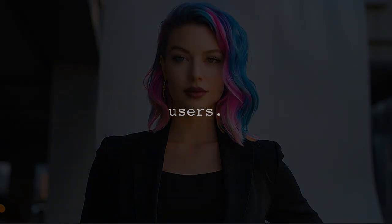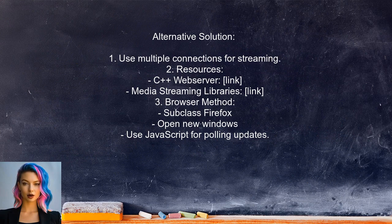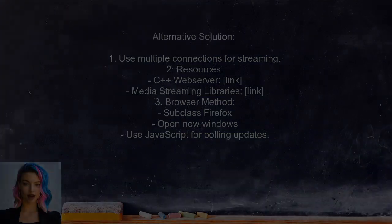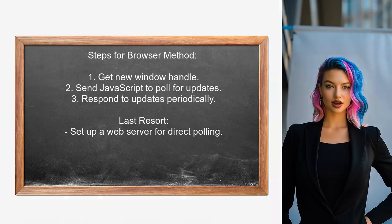An alternative approach suggests using multiple connections to manage streaming, with links to resources for setting up a web server in C++ and media streaming libraries. Another method uses a web browser — specifically Firefox — to create a program that polls for updates by subclassing the browser, opening new windows, and running JavaScript to handle streaming updates, including getting the window handle, sending JavaScript to pull for updates, and responding to changes. Setting up a web server for direct connections is also suggested as a last resort.